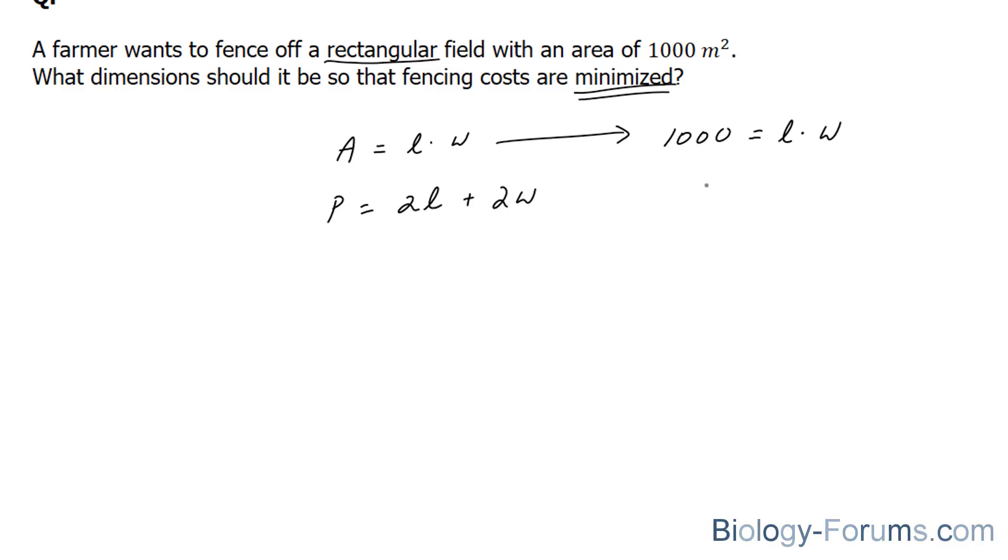You could have isolated L, it's up to you. So I'll isolate for W and then I'll take its content and place it into this equation. W is equal to 1,000 over L.